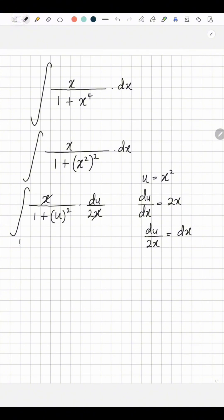The x cancels off. You can take the half outside, all you have to integrate is 1 over 1 plus u squared dot du.